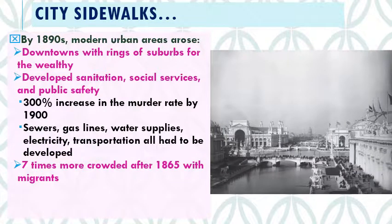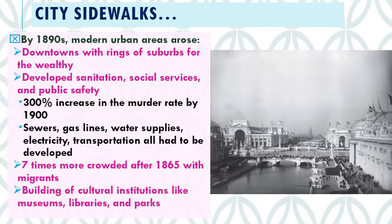Cities were highly crowded after 1865. Migration into cities, both from European migrants and people from the countryside, made cities seven times more crowded after the Civil War. On the plus side, concentrating so many people in a small space generated surplus money and support for cultural institutions like museums, libraries, and parks. Many well-known museums, libraries, and parks got built in the 1890s and early 1900s.